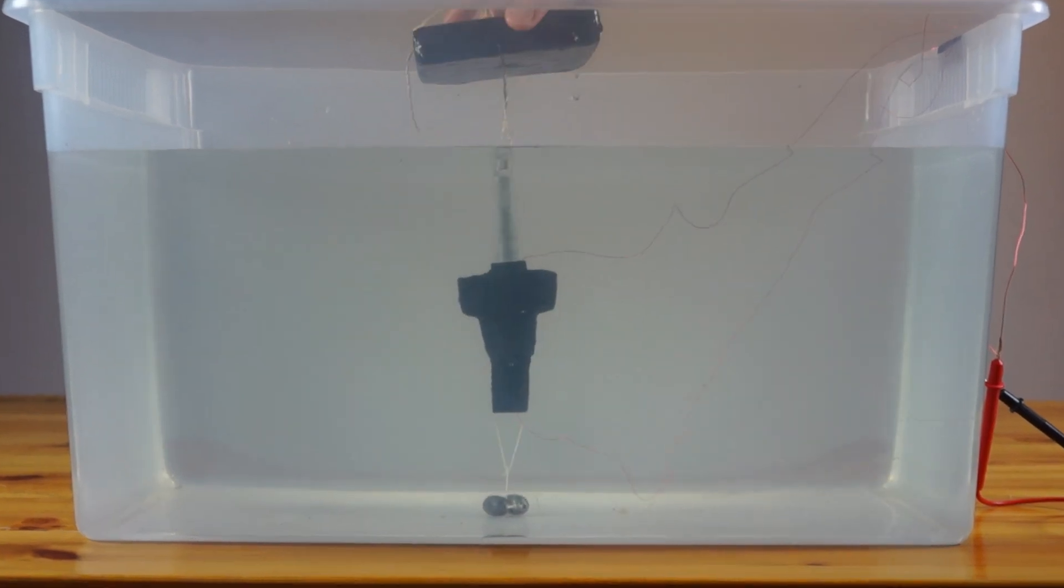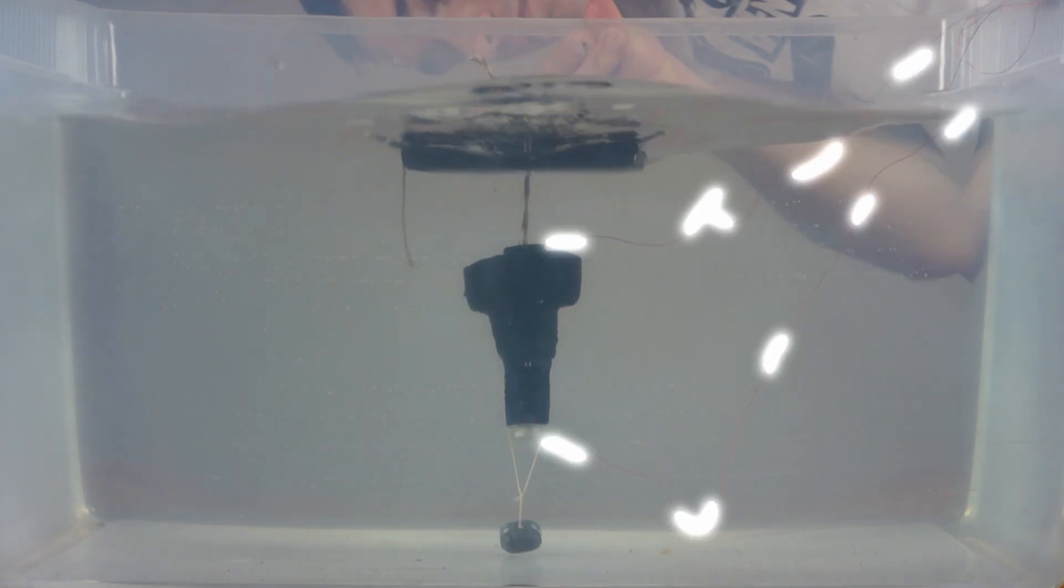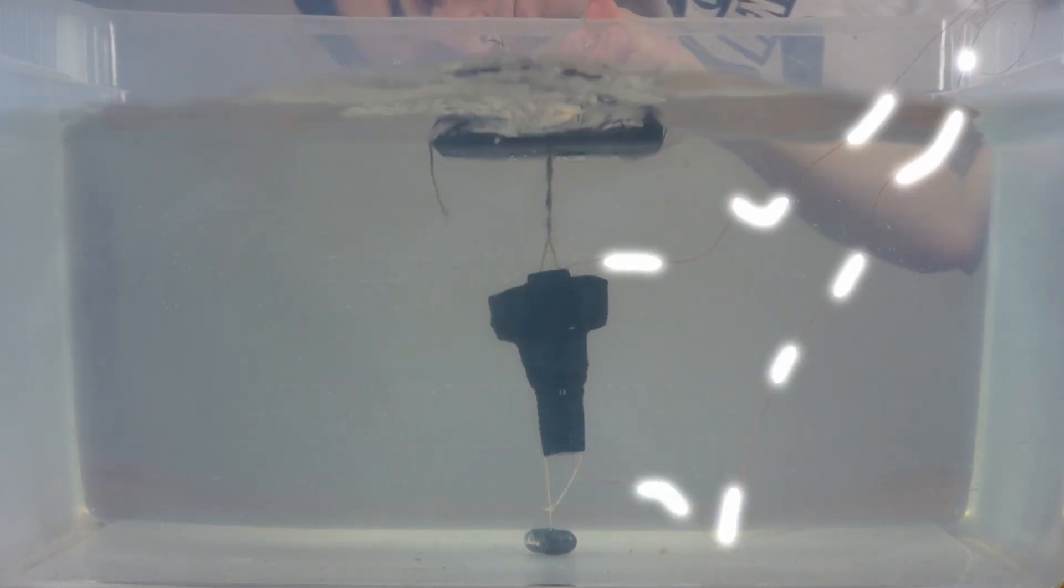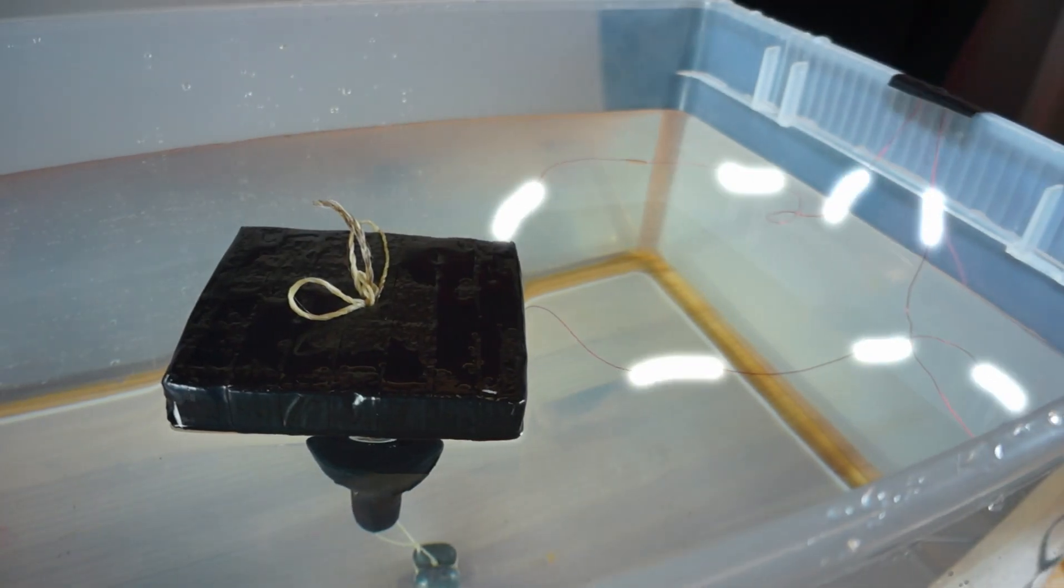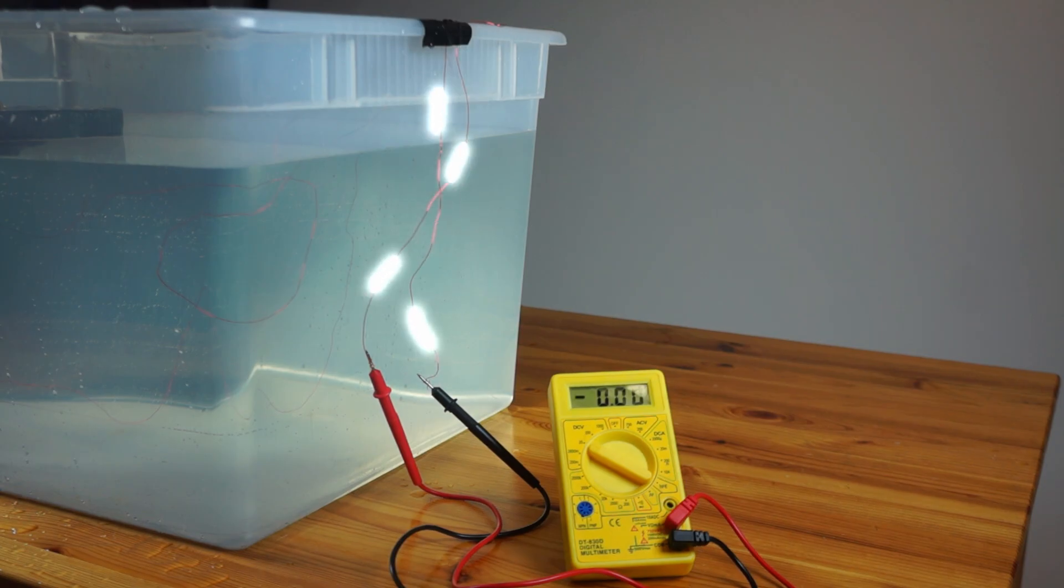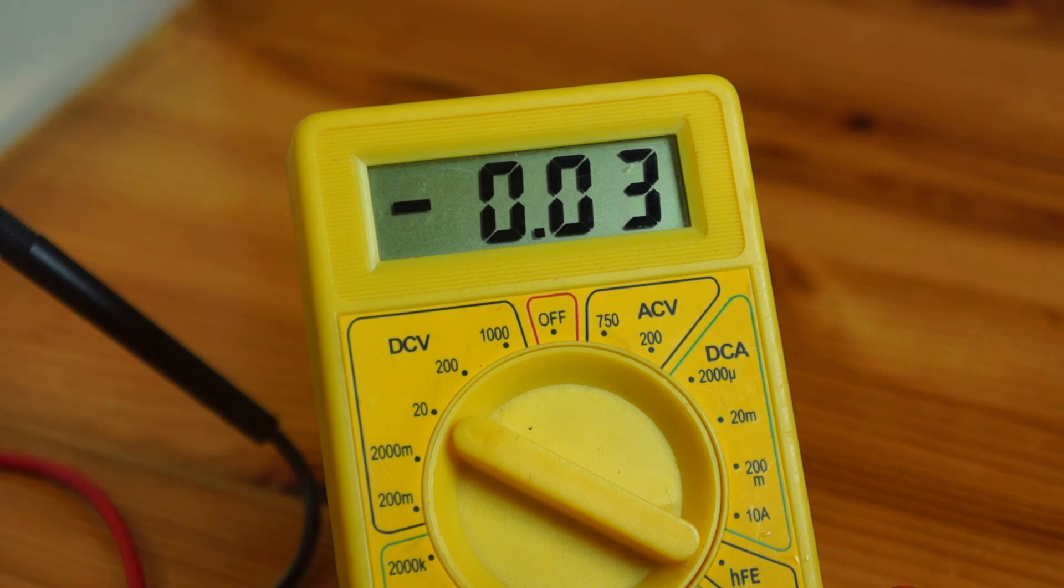This is a model I developed and built which harnesses the vertical movement of waves to produce electricity. The electricity then runs through two wires to a multimeter which displays the created DC voltage.